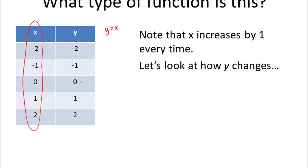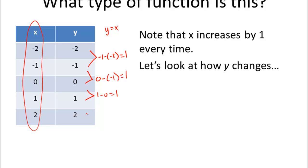Now let's look at how y changes. We're going to look at the difference between the numbers, and we always take the second one minus the first one — final minus initial. So negative 1 minus negative 2 is 1. Zero minus negative 1 is 1. One minus 0 is 1. And 2 minus 1 is 1. The difference is always 1. This is what we call a common difference.